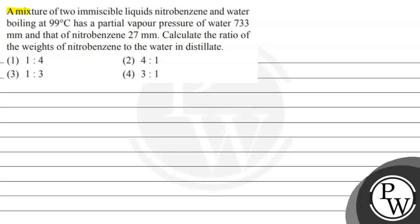Hello, let's read this question. A mixture of two immiscible liquids, nitrobenzene and water, boiling at 99 degrees Celsius, has a partial pressure of water of 733 mm and that of nitrobenzene 27 mm. Calculate the ratio of the weights of nitrobenzene to water in the distillate. The options given are 1:4, 4:1, 1:3, and 3:1.